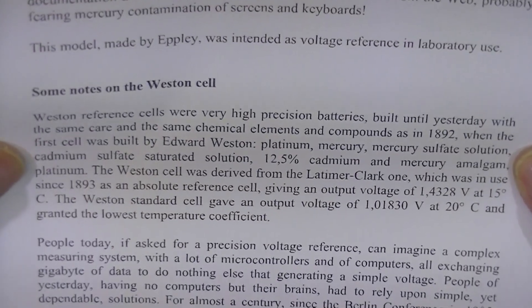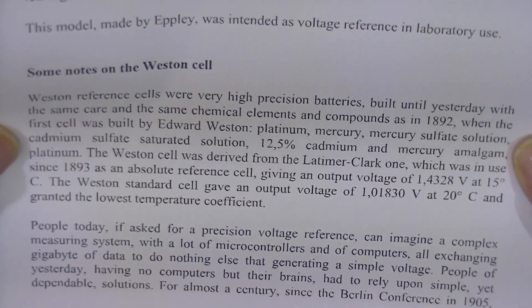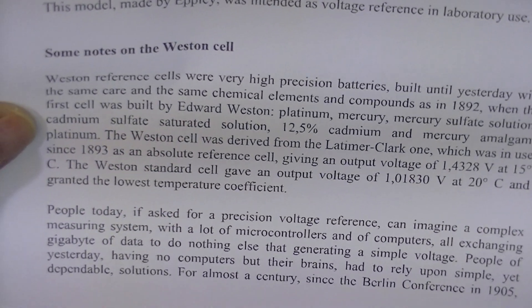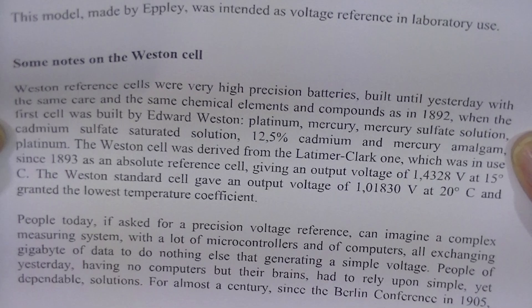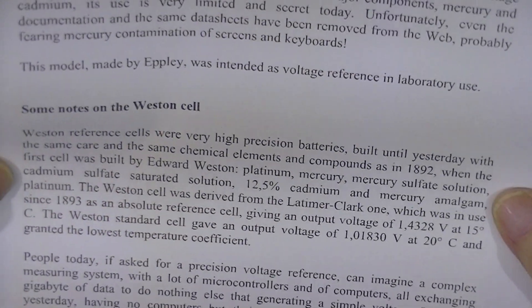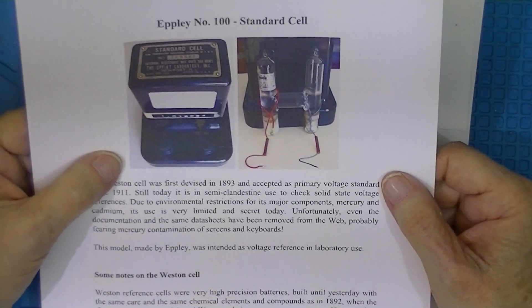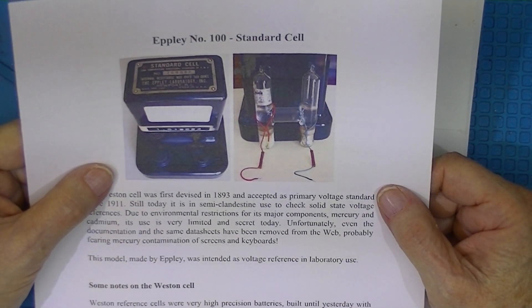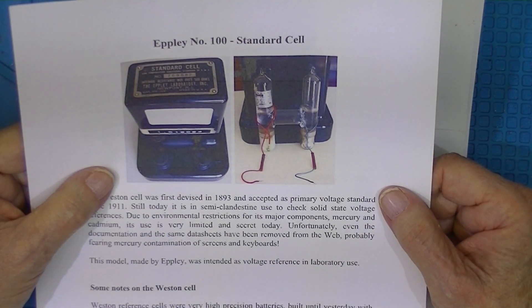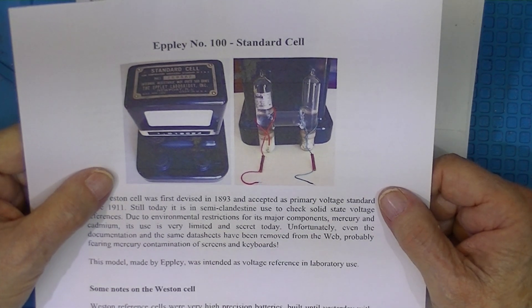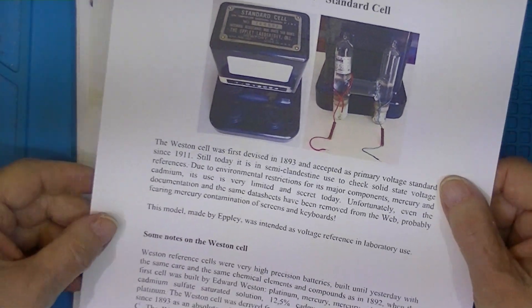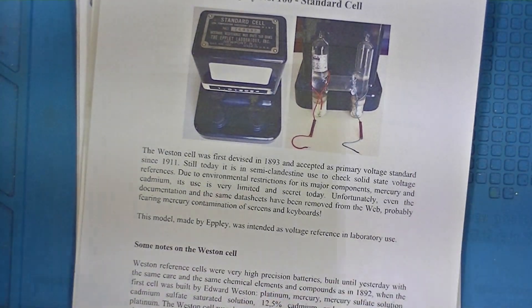This is a description of what constitutes a Weston cell: platinum mercury, mercury sulfate, cadmium sulfate, and cadmium and mercury amalgam. Now, I don't mind having this stuff around. I don't mind having mercury thermometers or mercury relays. But probably it's not a good idea for people that are young or have children.